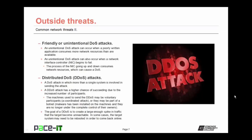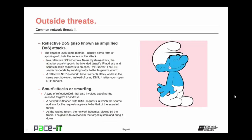The goal of the DDOS is to create a large enough spike in traffic that the target becomes unreachable. In some cases the target system may need to be rebooted to come back online. There's also the reflective denial of service attack, also known as an amplified DOS. The attacker uses spoofing to hide the source of the attack — in a reflective DNS attack, the attacker spoofs the intended target's IP address and sends multiple requests to an open DNS server, hoping the response will overwhelm the targeted system. A cousin to this is the reflective NTP attack, which works the same way but relies upon open NTP servers.